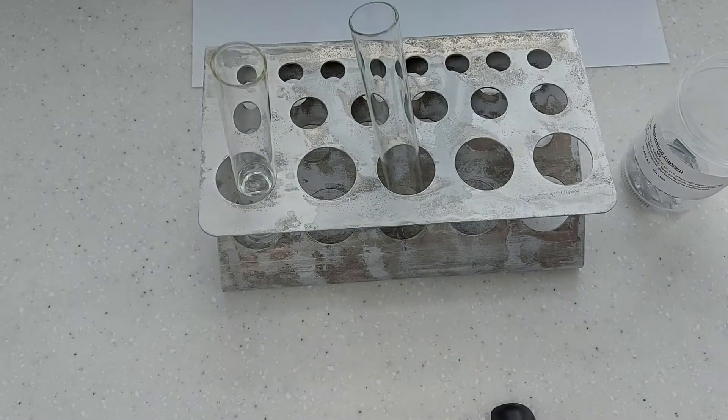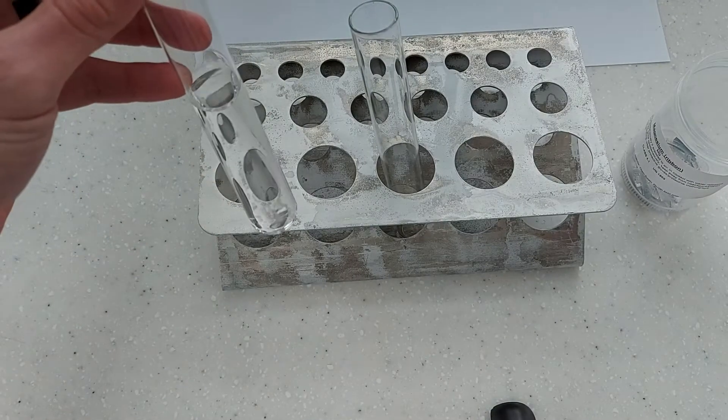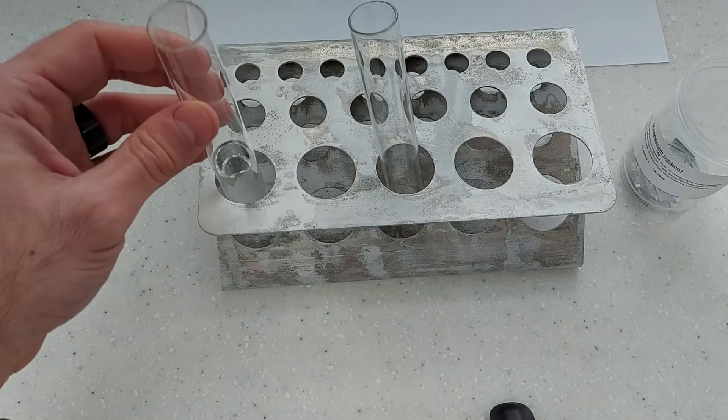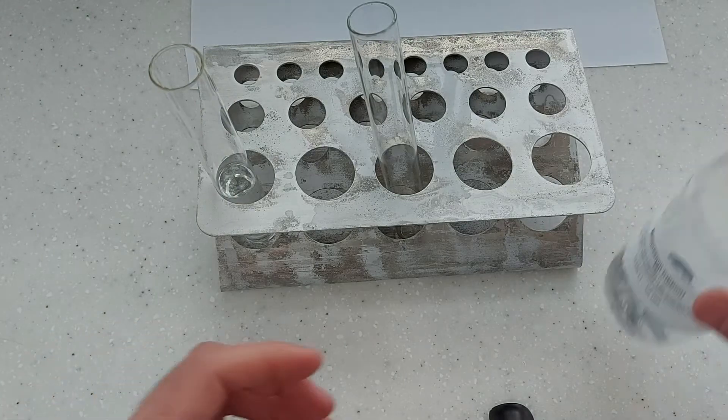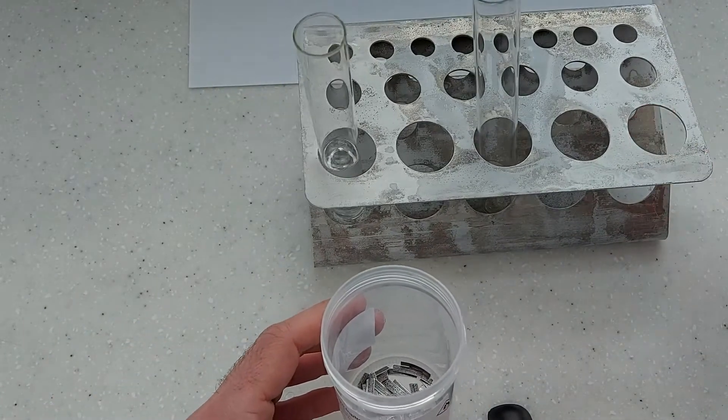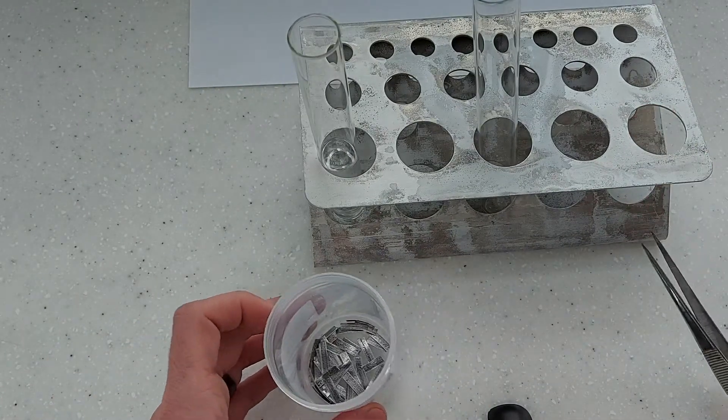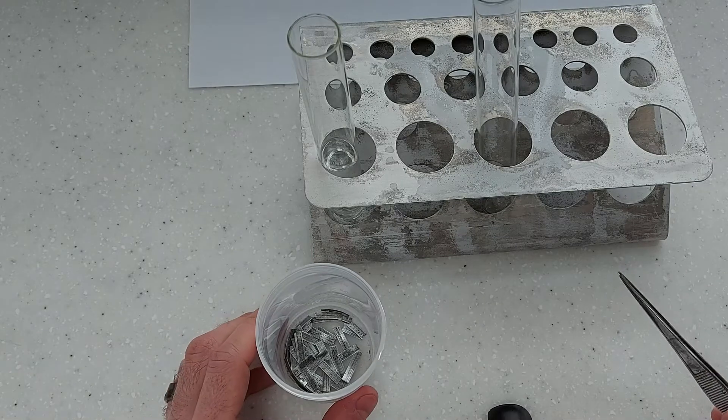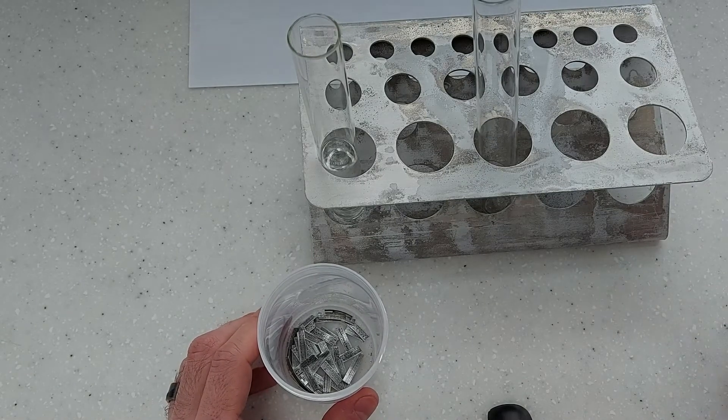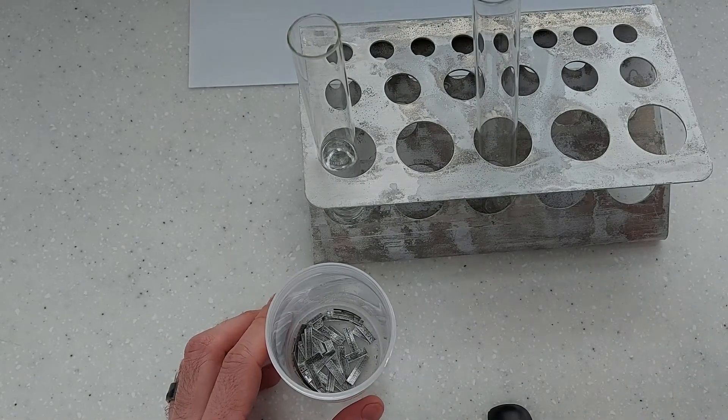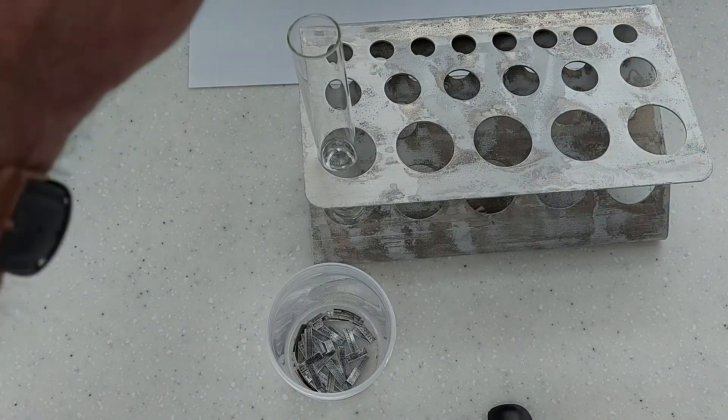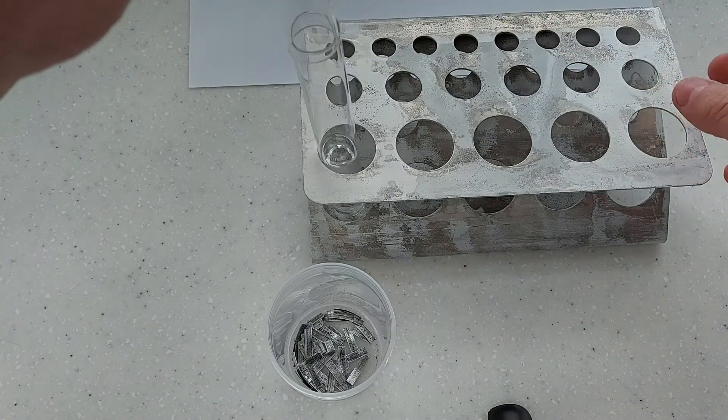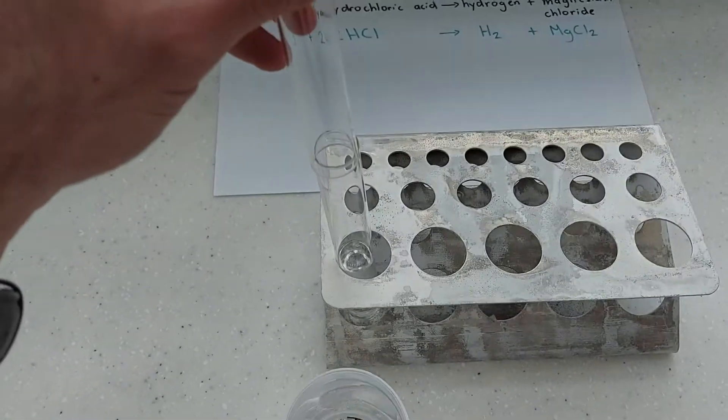I've already filled this test tube with hydrochloric acid, so I'm going to place a strip of magnesium within that test tube. Now it's going to start bubbling and that bubbling that you see will be the hydrogen gas. I'm going to try to collect it in this test tube and I'll adjust the camera as well so you can see.